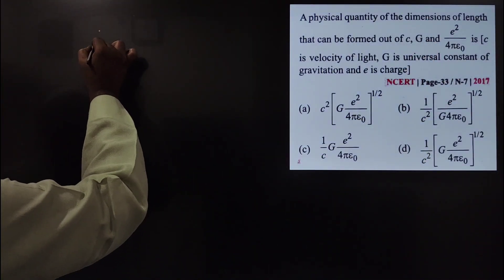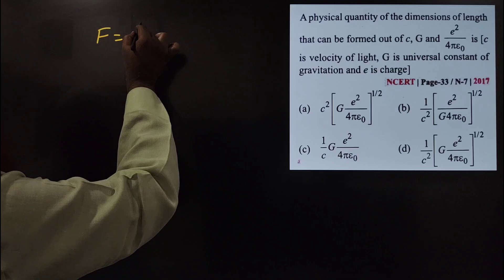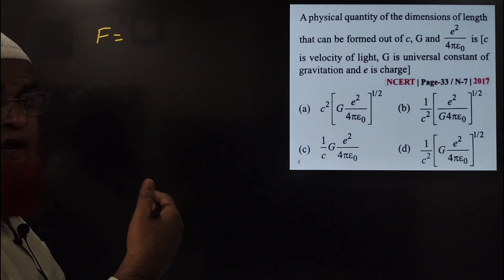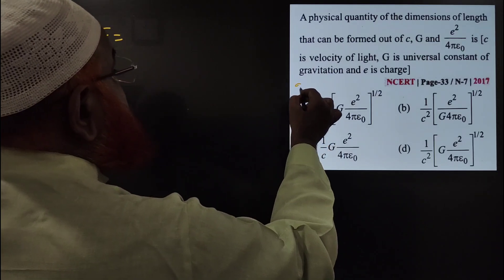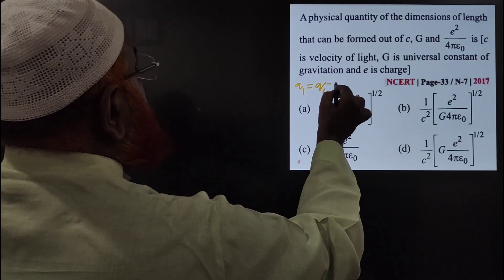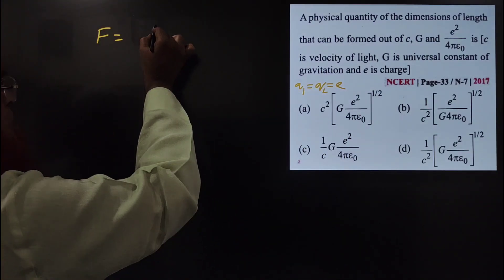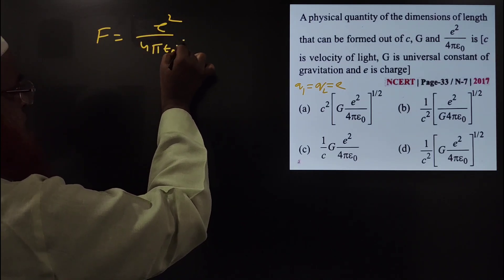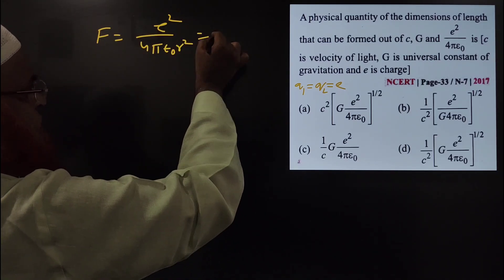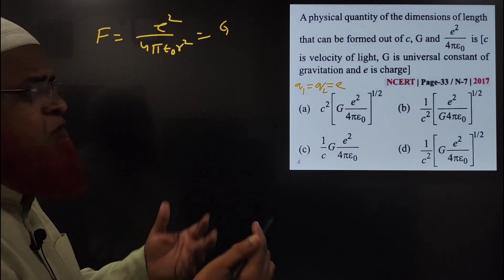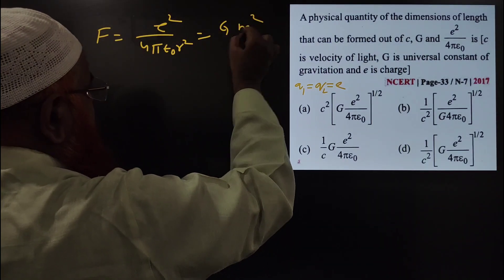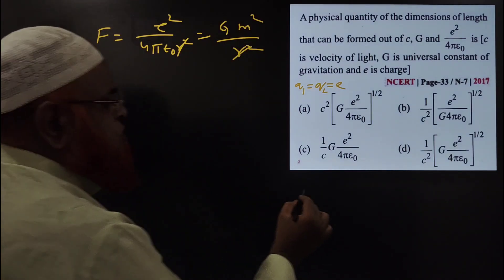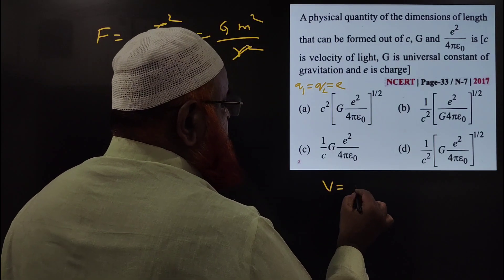You know the electrostatic force can be written as Q1·Q2 by 4π epsilon naught into R². I am taking Q1 and Q2 as E, so Q1·Q2 becomes E² by 4π epsilon naught into R². For gravitational constant, G·M1·M2 divided by R² — I take M1 and M2 as M, giving G·M² by R². The R² terms cancel each other.